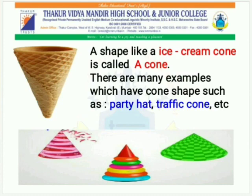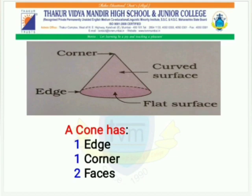Now, let's take a look at the shape like an ice cream cone. It is called a cone. There are many examples which have cone shapes, such as a party hat, traffic cone, etc. Children, a cone has one edge, one corner, and two faces.